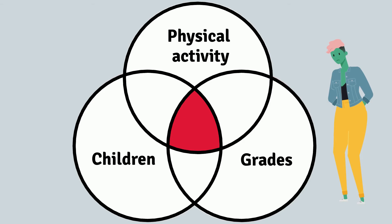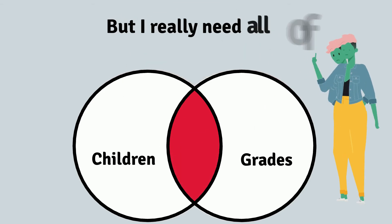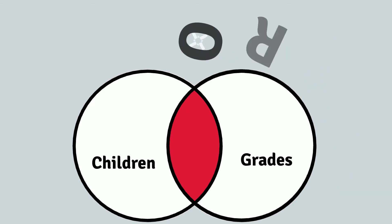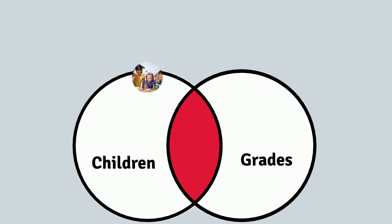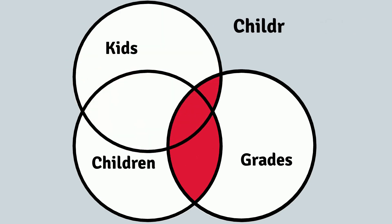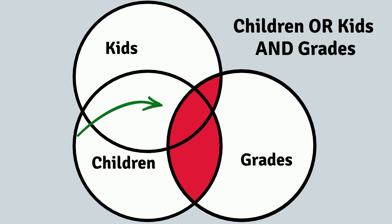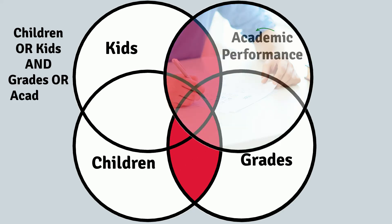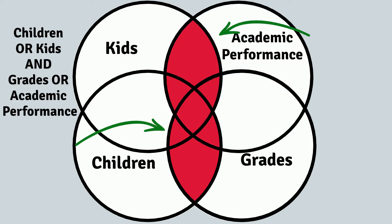First, we can take away some words to make the red area bigger. But when we can't take away anything else, remember OR? We'd still be happy to find sources that use the words children or kids, so let's search for children or kids and grades — the red area gets bigger. If we search for children or kids and grades or academic performance, the red area gets even bigger.